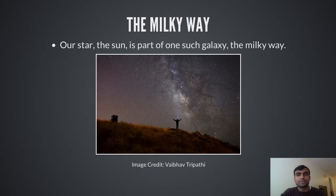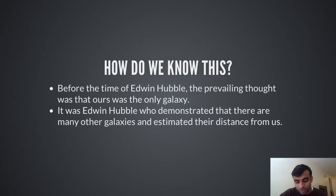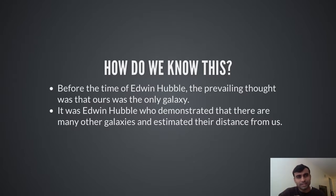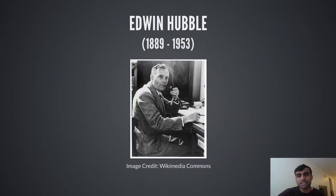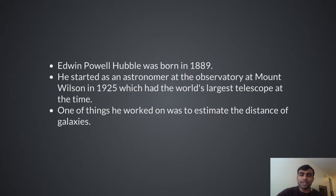Our star, the sun, is part of one such galaxy — the Milky Way. But how do we know all this? Before the time of Edwin Hubble it was believed that ours was the only galaxy. It was Edwin Hubble who showed that there are many galaxies, and he also worked on finding out the distance of these galaxies. Hubble was born in 1889 and he started in 1925 as an astronomer at Mount Wilson, where one of the things he worked on was estimating the distance of galaxies.